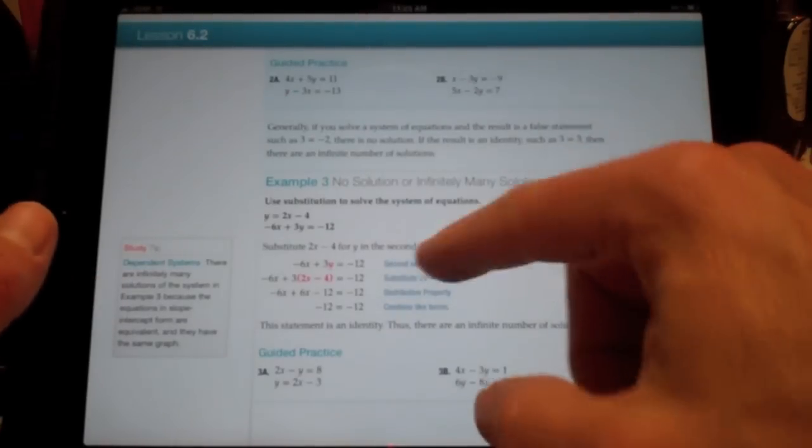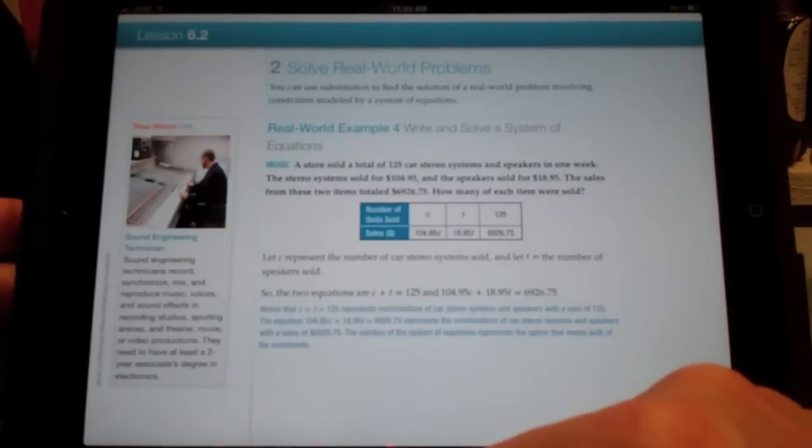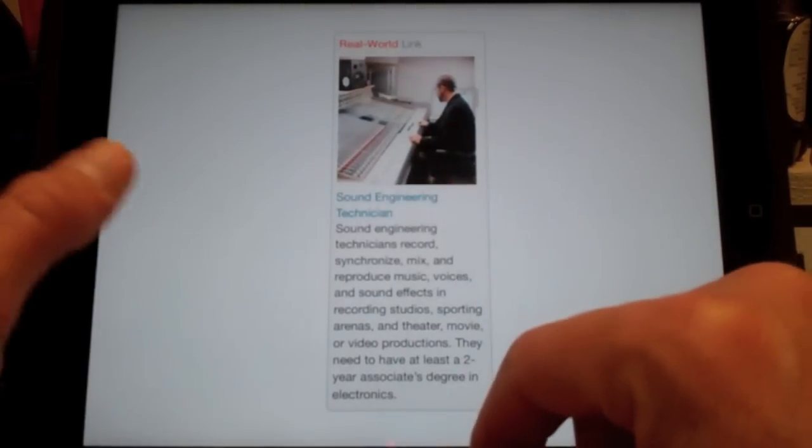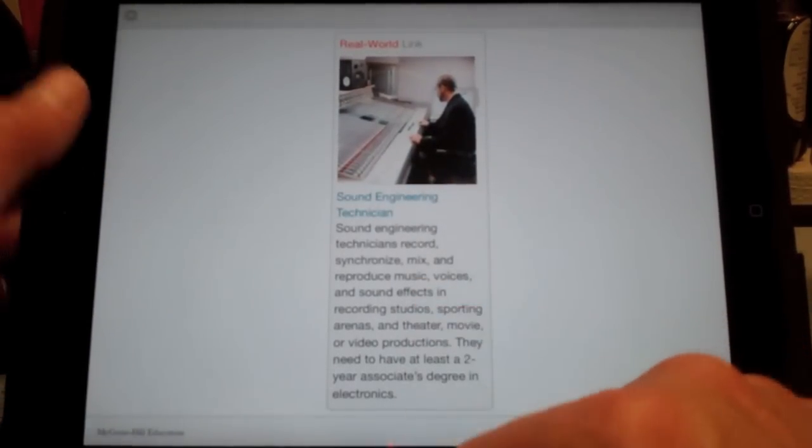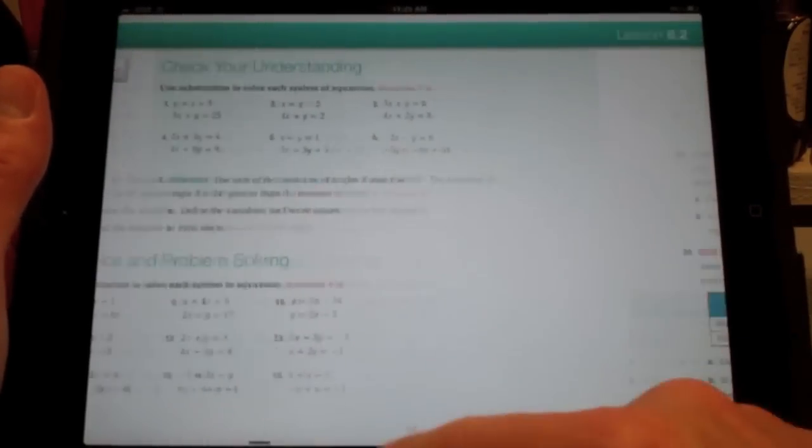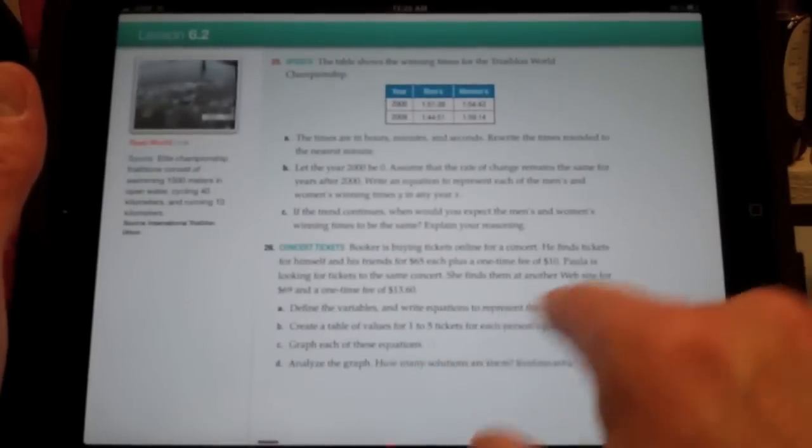As I go through these things, there's some guided practice, a real-world link, which just opens up. I haven't been able to find any extra thing like going to a website or something of that nature. I continue to go through, and I can see that this is the way I can go through the chapters.